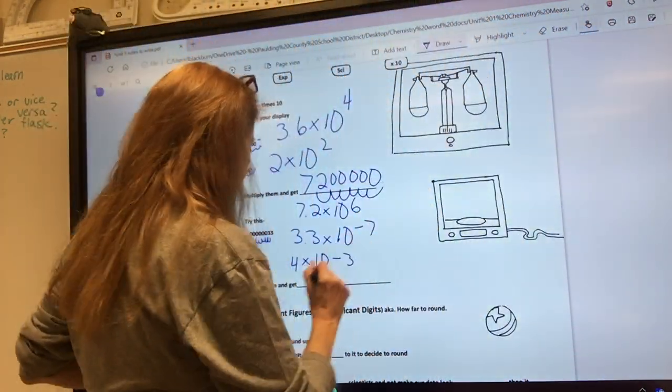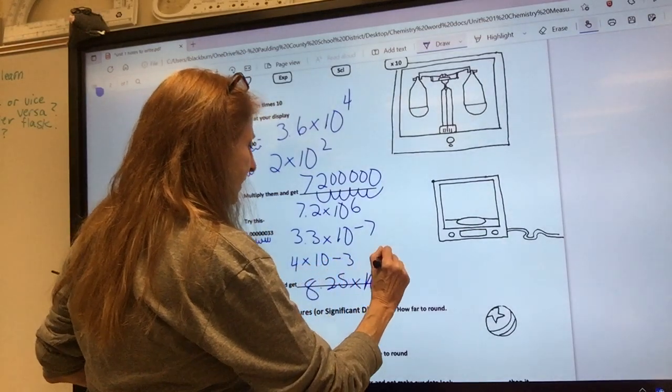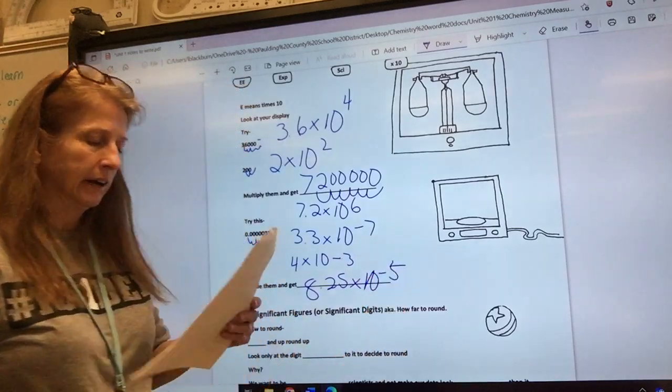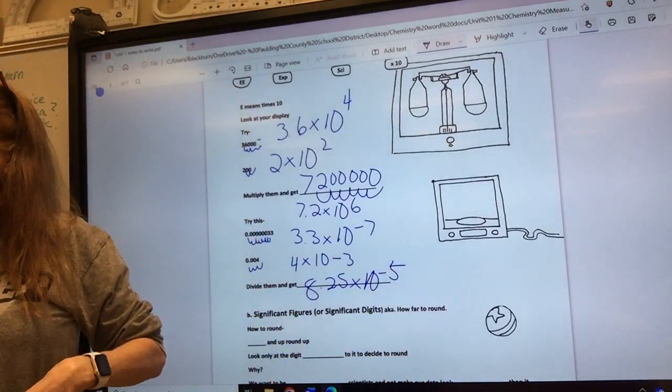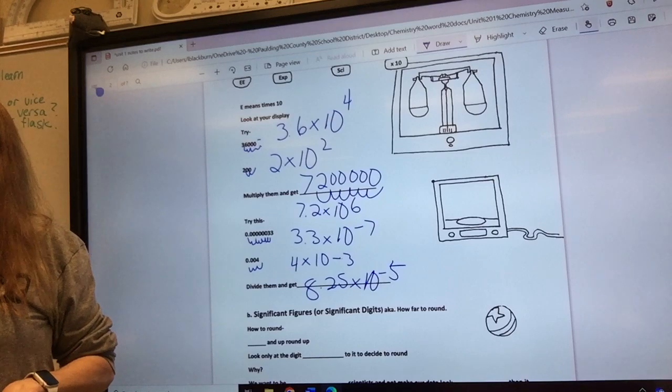Did you get 8.25 times 10 to the negative fifth? Did you get it? Did I do it too fast? Did I not give you enough time?